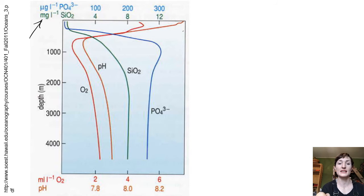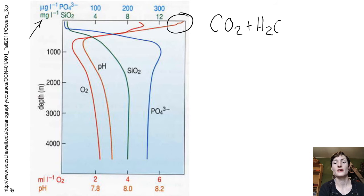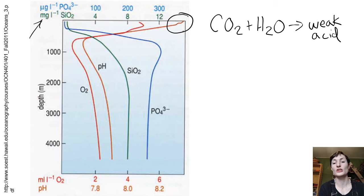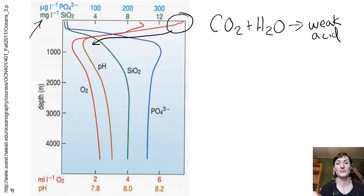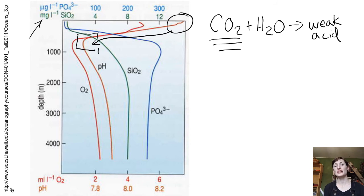pH starts off high at the surface, meaning it's really basic. That's because photosynthesizers are using up all the CO2, and CO2 plus water makes carbonic acid — a weak acid. So in the top layers where CO2 is consumed by photosynthesis, it's not acidic — it's very basic. As we transition from photosynthesis to cellular respiration being the dominant process, we start producing a lot of CO2, consuming oxygen, generating carbonic acid, and our pH drops. So the pycnocline brings huge changes in nutrients, temperature, salinity, density, and pH.